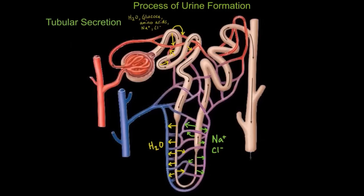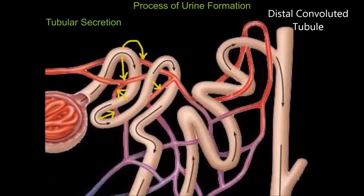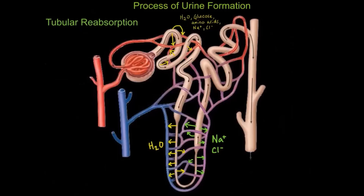After the loop of Henle, the remaining substances enter the distal convoluted tubule. In the distal convoluted tubule, we see tubular secretion of ammonia, hydrogen ions, potassium ions, and drugs. Finally, after the distal convoluted tubule, the substances — now called urine — enter the collecting duct.